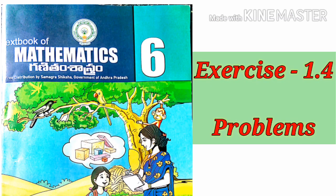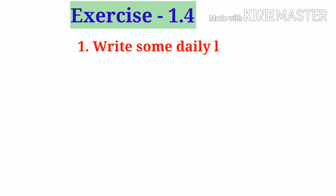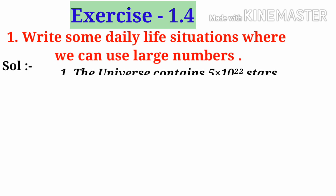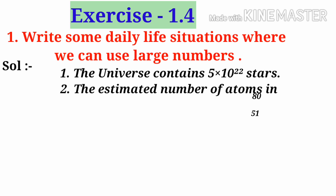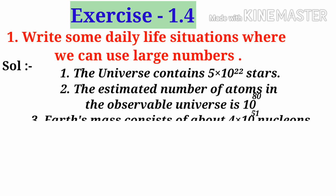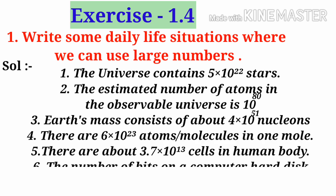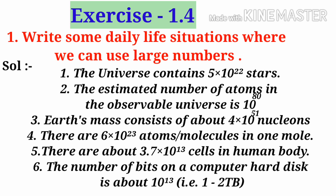Exercise 1.4, Problem No. 1: Write some daily life situations where we can use large numbers. Large numbers examples: 1. The universe contains 5 × 10²² stars. 2. The estimated number of atoms in the observable universe is 10⁸⁰. 3. Earth's mass consists of about 4 × 10⁵¹ nucleons. 4. There are 6 × 10²³ atoms or molecules in 1 mole. 5. There are about 3.7 × 10¹³ cells in the human body. 6. Number of bits on a computer hard disk is about 10¹³, that is 1 to 2 terabytes. These are large numbers especially used in physical science.